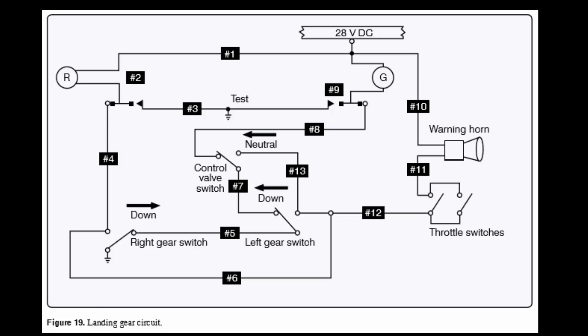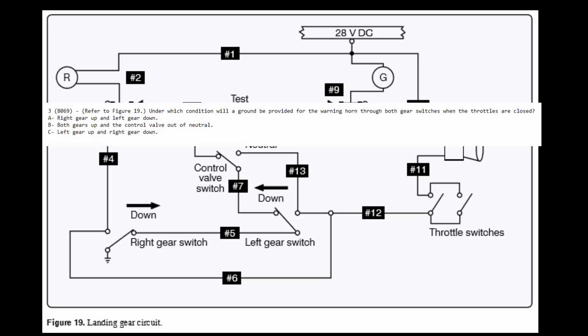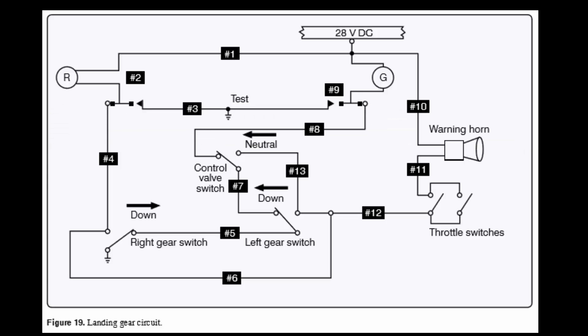The first question we're going to look at says refer to Figure 19: under which condition will a ground be provided for the warning horn through both gear switches when the throttles are closed. So looking at our warning horn, it is already getting 28 volts DC down through wire 10. So there's power to the horn. Now the other side of the horn is seeking a ground.